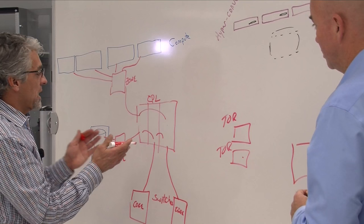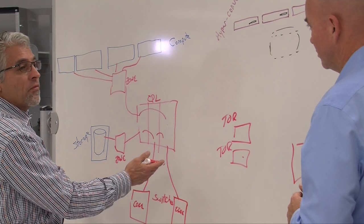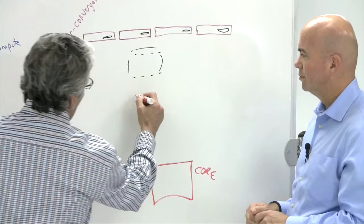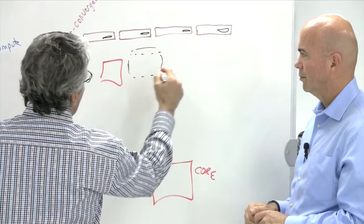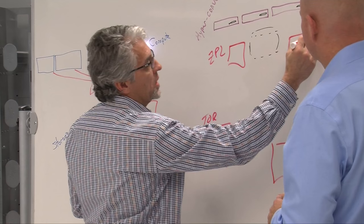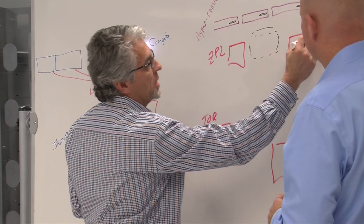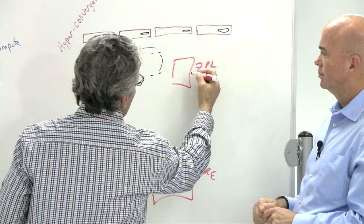Which I believe then leads us right back to where we started, to where IBM started, with the first true structure cabling for the mainframe environment in the data center. So if you look at putting what IBM called zone patching locations out, distributed on the floor.